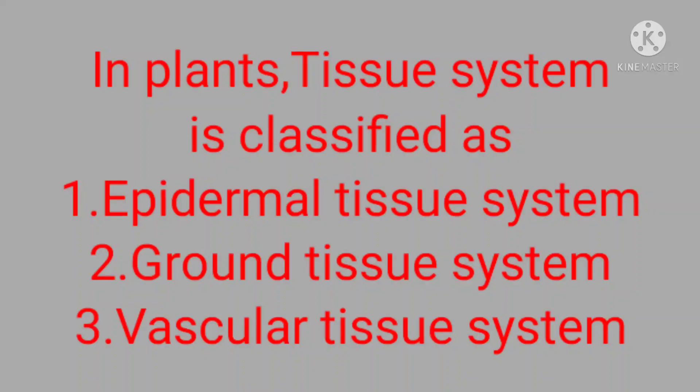In plants, the tissue system is classified into three systems. That is, Epidermal tissue system, Ground tissue system, and Vascular tissue system.